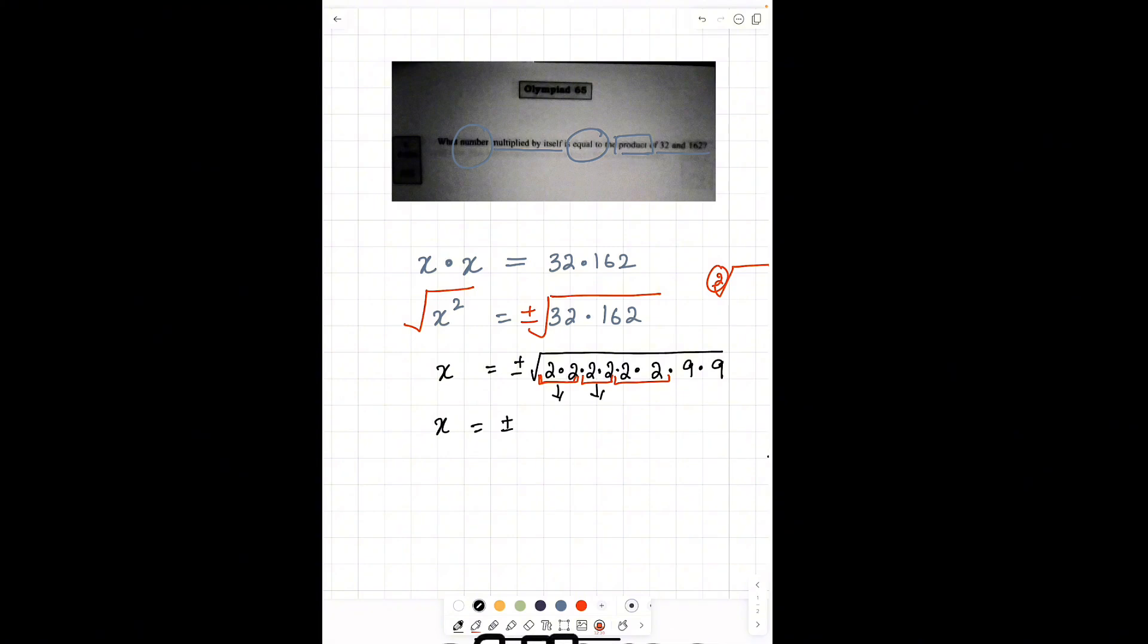This gives you plus minus and take out each factor from one group. So you get 2 times 2 times 2 times 9. One number comes out from each group or each set. This will give you plus minus 72.